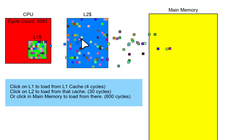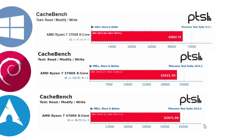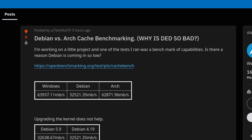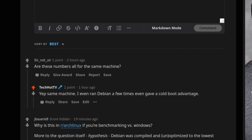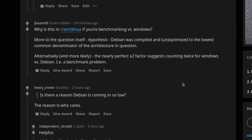The Cachebench benchmark tests memory and cache bandwidth, measured in megabytes per second — higher is better. We got an odd result: Windows beat Arch by about 1000 MB/s, but Debian fell behind by almost double, coming in at 32,500 MB/s. After consulting professionals on Reddit, this is likely an issue with the benchmarking tool due to the near-perfect x2 factor — meaning Debian may actually come in first if its result was halved.